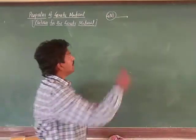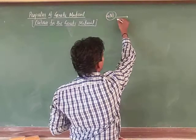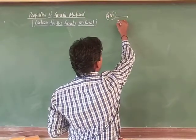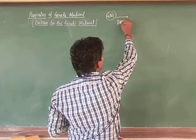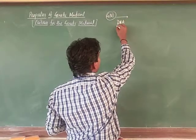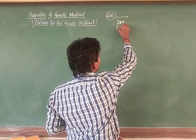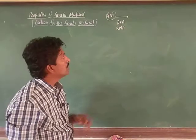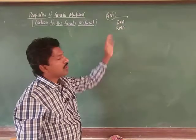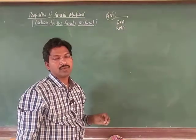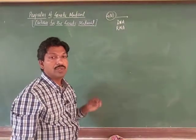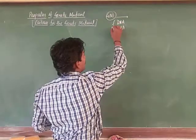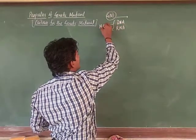The genetic materials are two: one is DNA and the other is RNA. Together we call them nucleic acids.